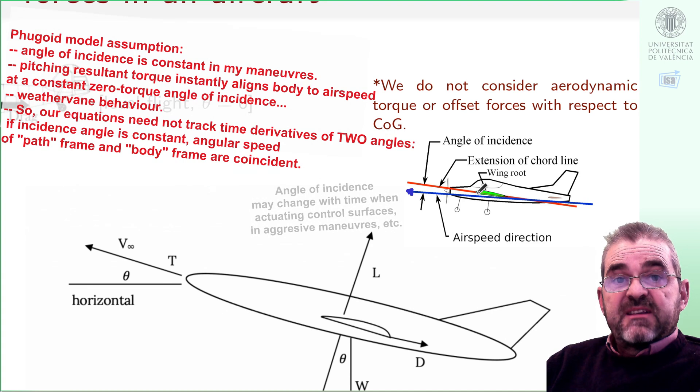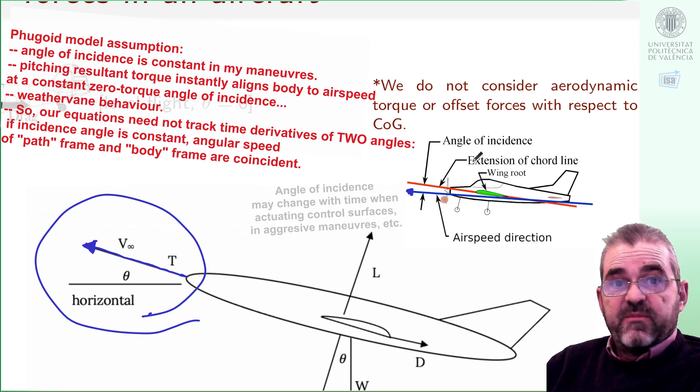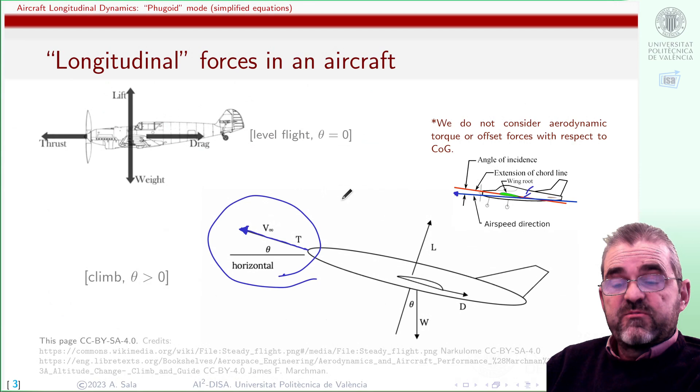So we need to keep track only of the angle of the blue line with respect to the horizontal because the other one will be the same one plus, let's say, 3 degrees. Lift and drag characteristics will depend on such angle of incidence, but we will assume it to be constant in our maneuvers. This will be one of our basic assumptions.